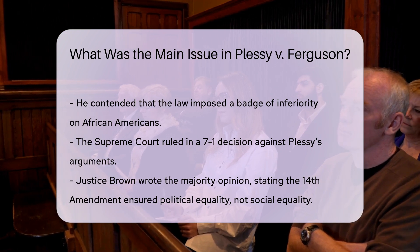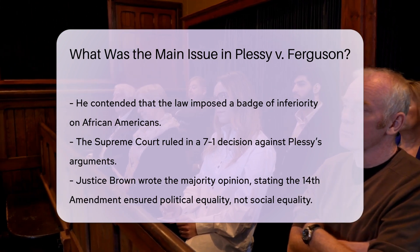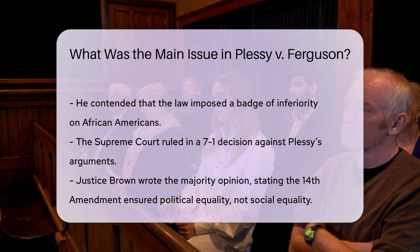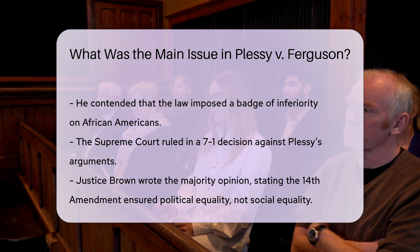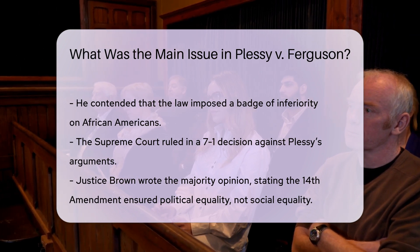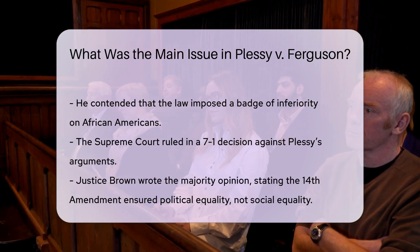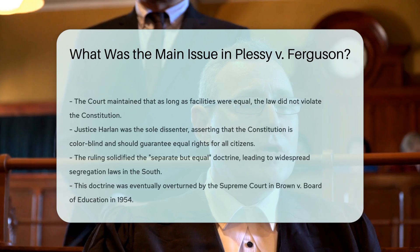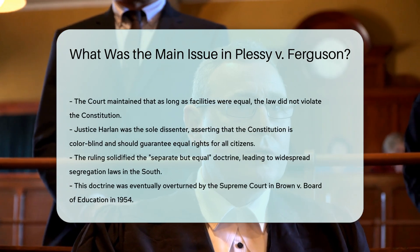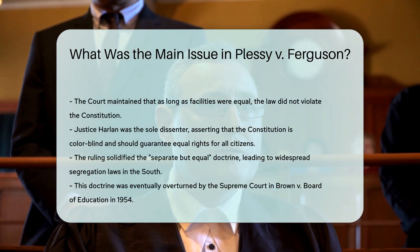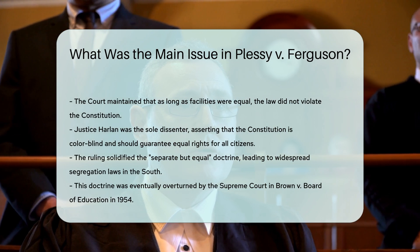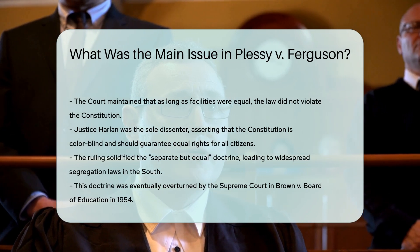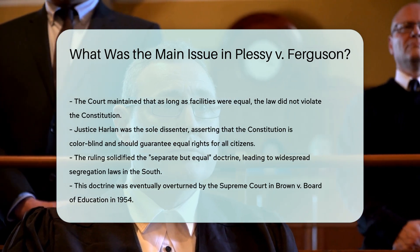Justice John Marshall Harlan, the sole dissenter, argued that the Constitution is colorblind and does not tolerate classes among citizens. He believed that the law was unjust and that equal rights should be guaranteed regardless of race.